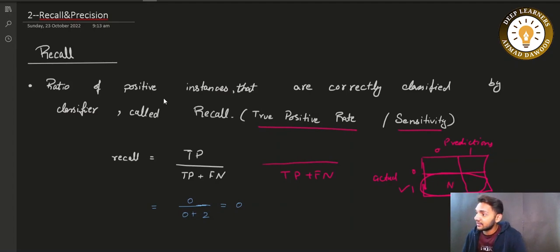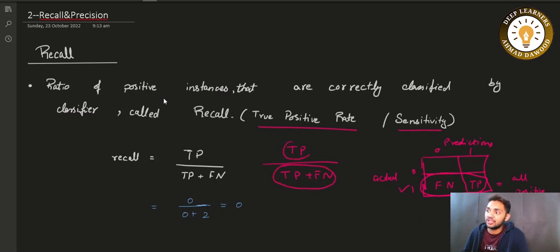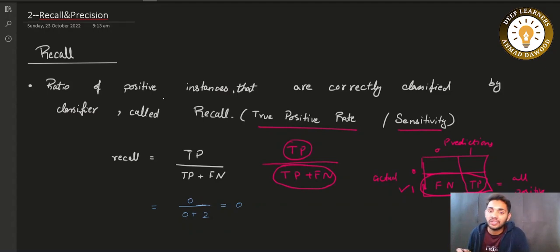False negative and true positive together give you all positive instances in the dataset that we use to evaluate the model. Recall measures how many samples are predicted as true positive out of all positive instances. How many samples are correctly classified as positive by the model out of all positive instances — this is the formula for recall.